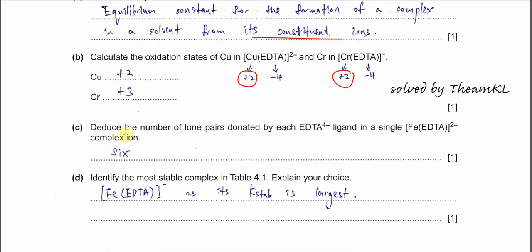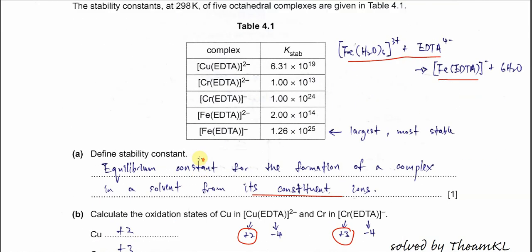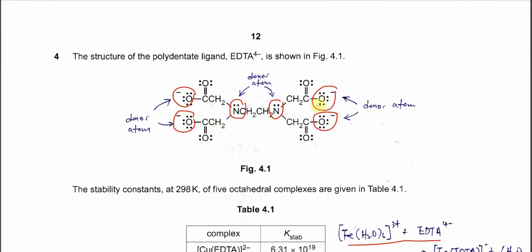Part C: deduce the number of lone pairs donated by each EDTA ligand in the complex ions. As already explained, EDTA can donate 6 lone pairs because it has 6 donor atoms, so it can form 6 dative bonds.